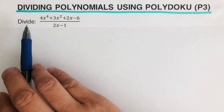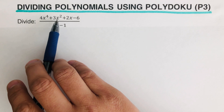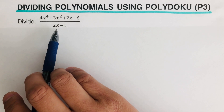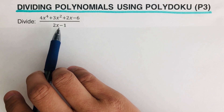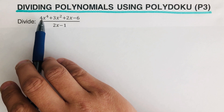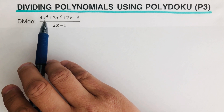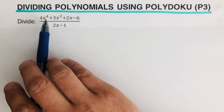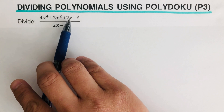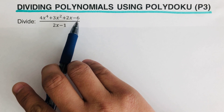Let's take this first example. We're supposed to divide 4x to the fourth plus 3x squared plus 2x minus 6, divided by 2x minus 1. If we look at the numerator, all the exponents are arranged in descending order — from 4 to 1, and then a constant at the end.